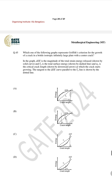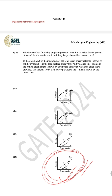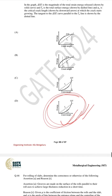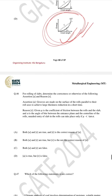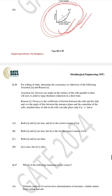For question number 45, where we have already discussed the solution, the correct answer is D — regarding Griffith's criterion and how crack length varies with energy. For question number 46, an assertion-reason type: the assertion is true and the reason is false, so the correct answer is D.